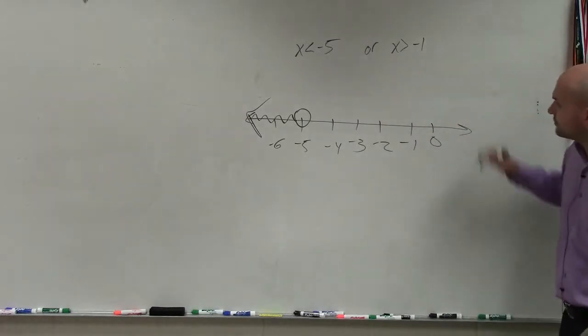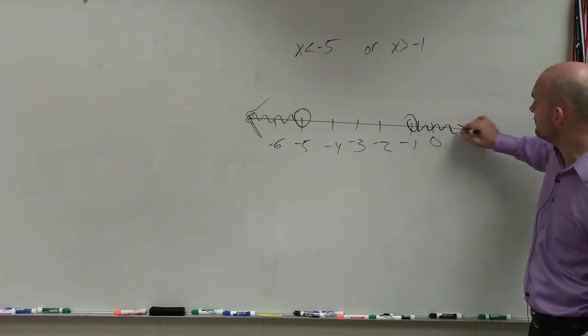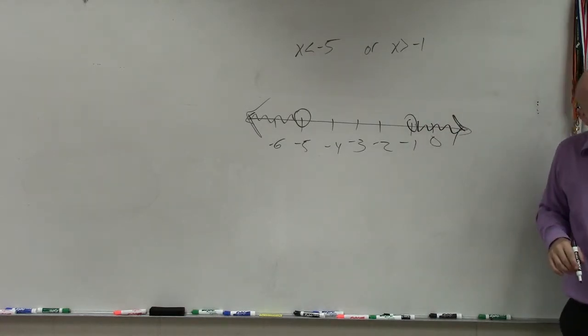Over here, I have x is greater than -1. So the values that are greater than -1 is going to go to the right, which will be your positive numbers. And that's going to be my final answer.